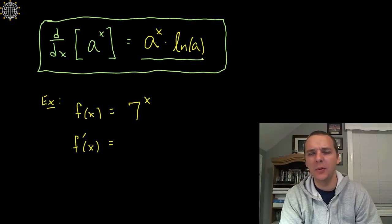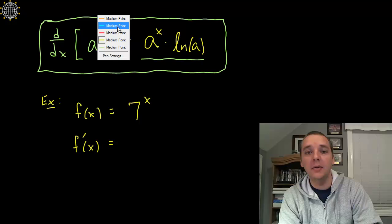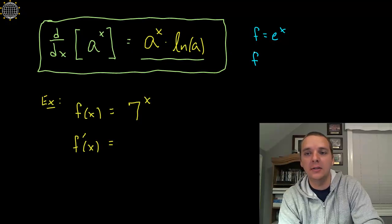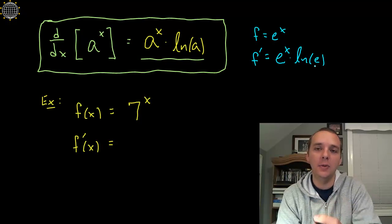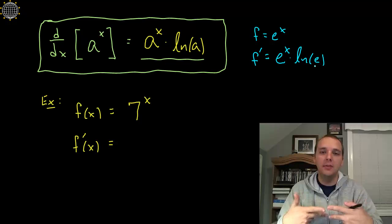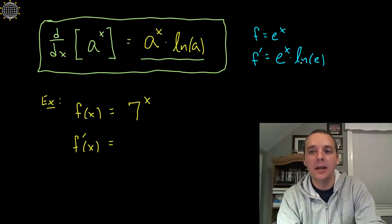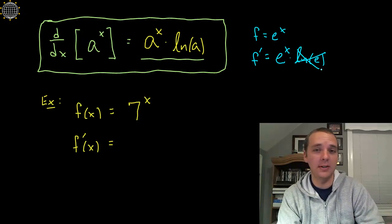You might wonder: why didn't we do that for e, but we do it for every other function? Believe it or not, the natural log term is actually there for e to the x too. If your function is e to the x, following this rule, the derivative would be e to the x times the natural log of e. But since e and the natural log are inverses of each other, the natural log of e equals 1, so we never write it. It's actually been there all along — we just didn't notice it.